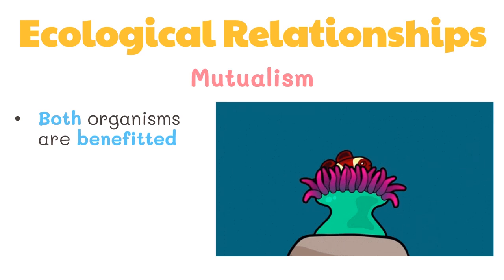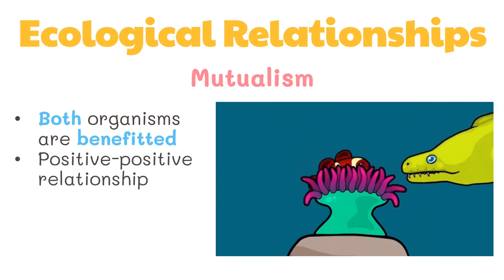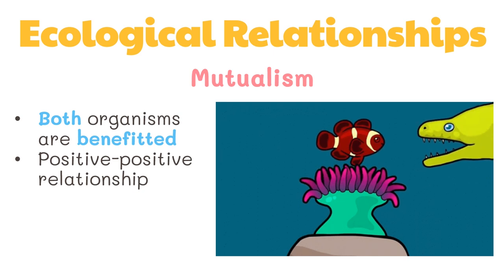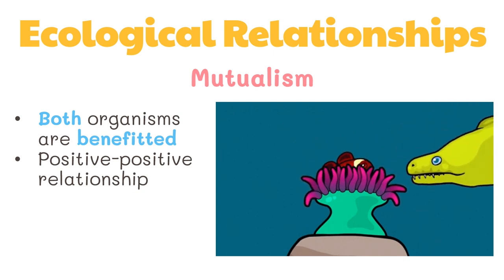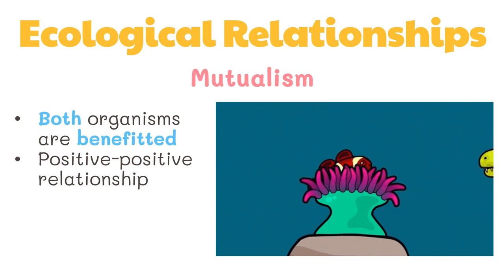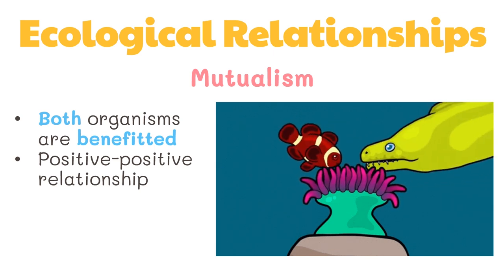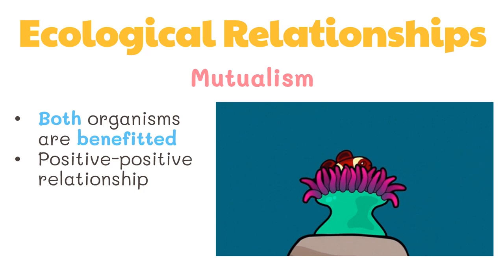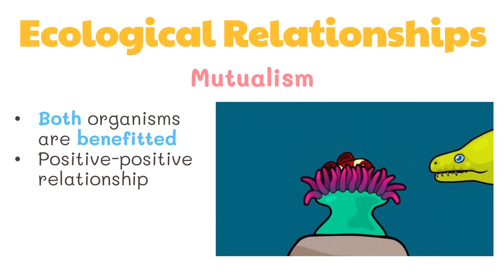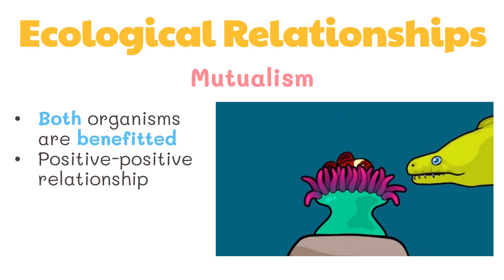Mutualism exhibits a positive-positive relationship. An example is the relationship between clownfish and sea anemones: the clownfish provides the anemone with nutrients in the form of waste and scares off potential predator fish, while the sea anemone provides the clownfish with protection and shelter.